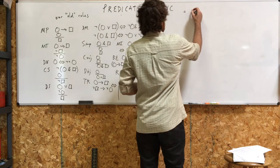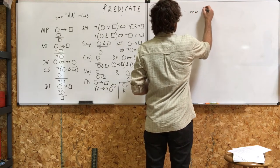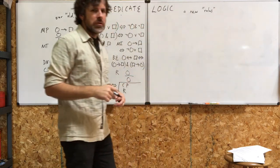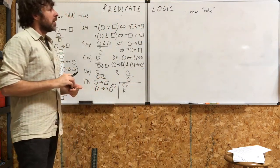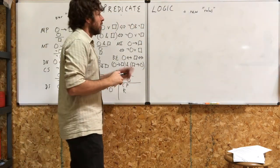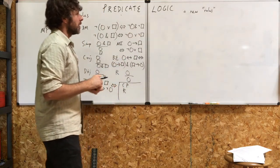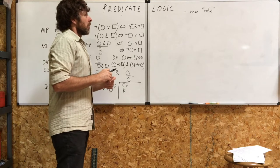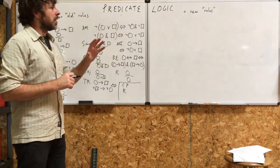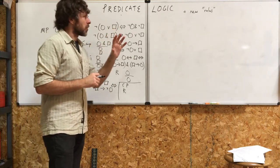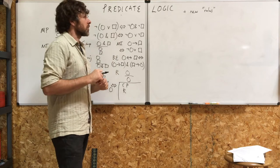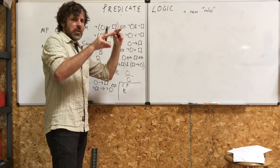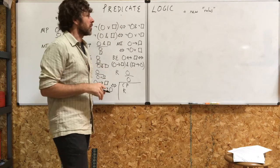Plus new rules. I'm going to list those new rules in the order that we're going to learn them, not in the order you find in the book. We're going to do it in terms of easy rules first, then the harder rules. The book does easy rule, hard rule, easy rule, hard rule — we're not going to do it that way.